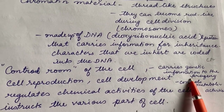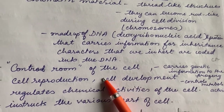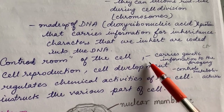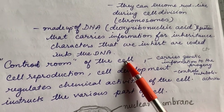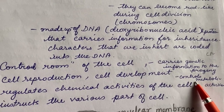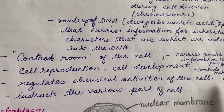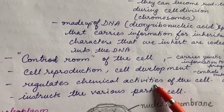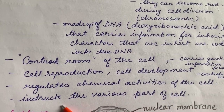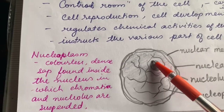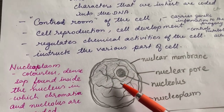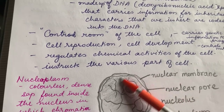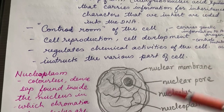The chromosomes carry genetic information to the progeny as well. When the cell undergoes division, it takes the information to the progeny. Some characters we get from both parents, because the information has been brought into our body with the help of chromosomes present in our parents. The nucleus also controls metabolic activities — all the chemical activities going on inside a cell are known as metabolic activity. It regulates the chemical activities of the cell and instructs the various parts of the cell, controlling the whole organism.